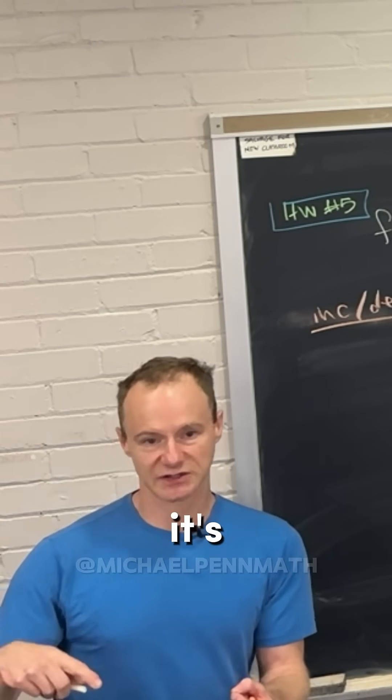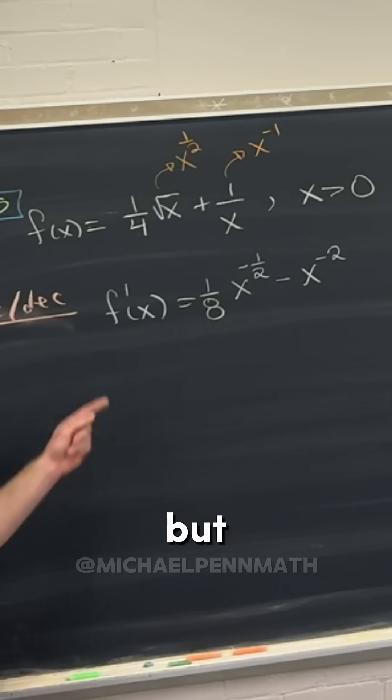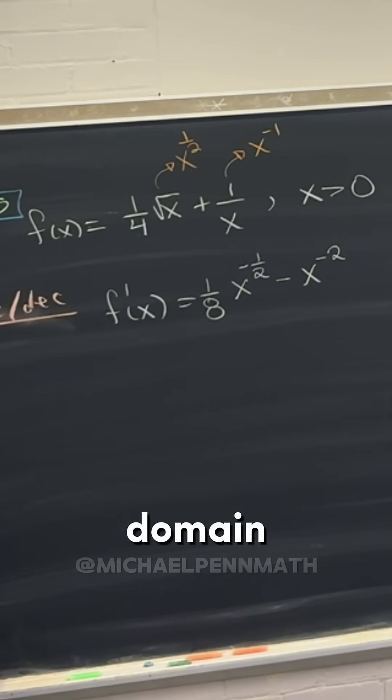That's like a little bit of a lie. It's where it's zero or it does not exist, but the only place this would not exist is at x equals zero, which is already outside of the domain.